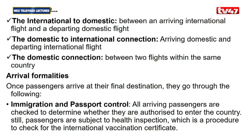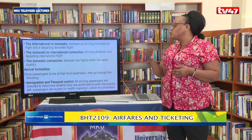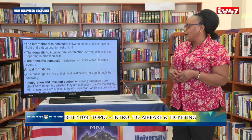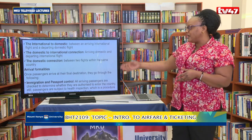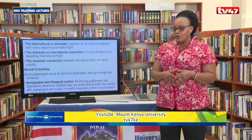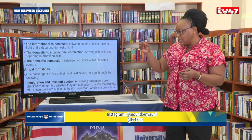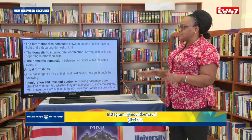If you understand these specific issues encompassing connections and transfers, you'll be well placed whenever you're in those areas and not confused about which flight to connect with. If you understand what is arriving and which is the departing flight, you'll be well placed at international airports. The last type is the domestic connection — simply a connection between two flights within the same country.